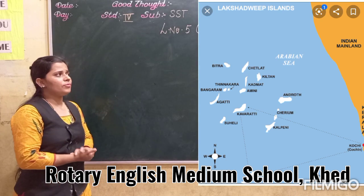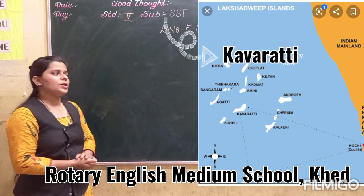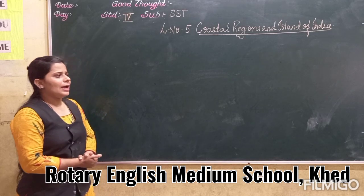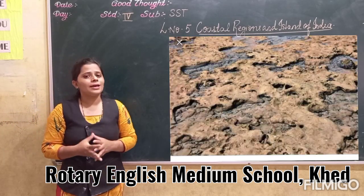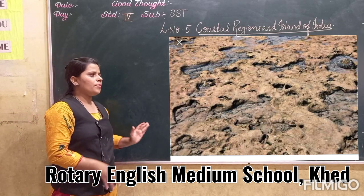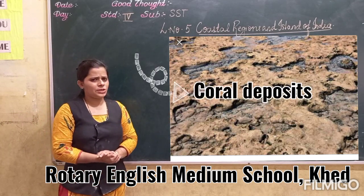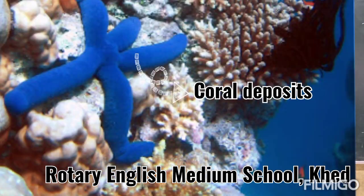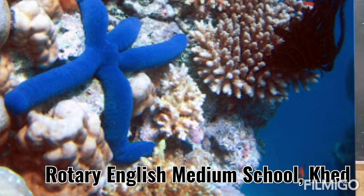The capital of Lakshadweep is Kavaratti. These islands are known as coral islands because they are formed by coral deposits. Coral is a hard substance which is formed from the bones of very small animals. You can see this in the images.